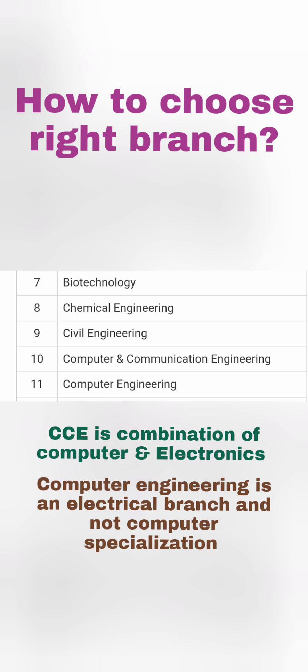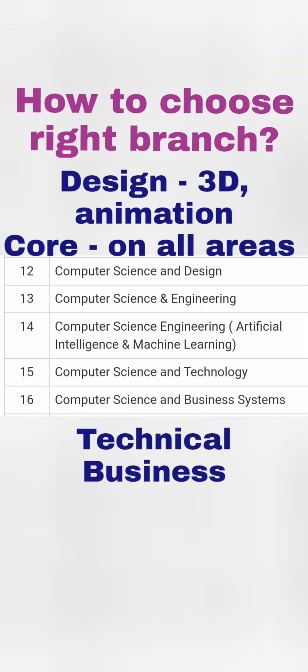CCE is the combination of Computer and Electronics and is a good option for students who want that mix. Computer Engineering is a combination of Electrical and Computer, but it is not a computer specialization branch — it is an electrical branch. Keep this in mind, though job prospects will be similar.